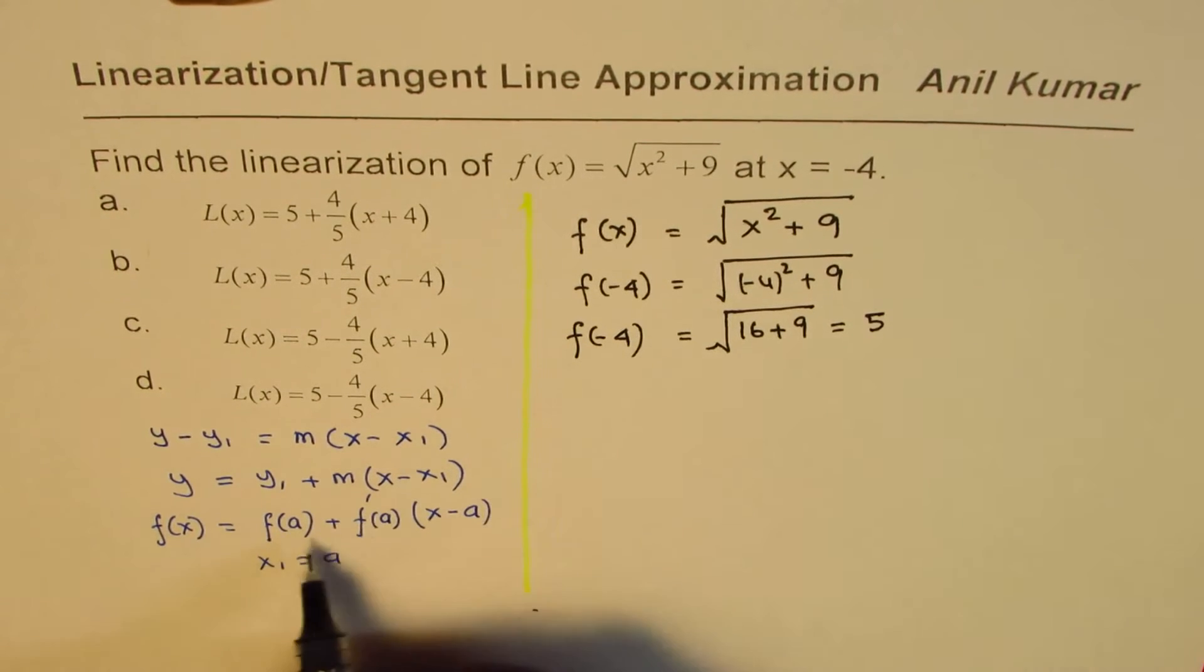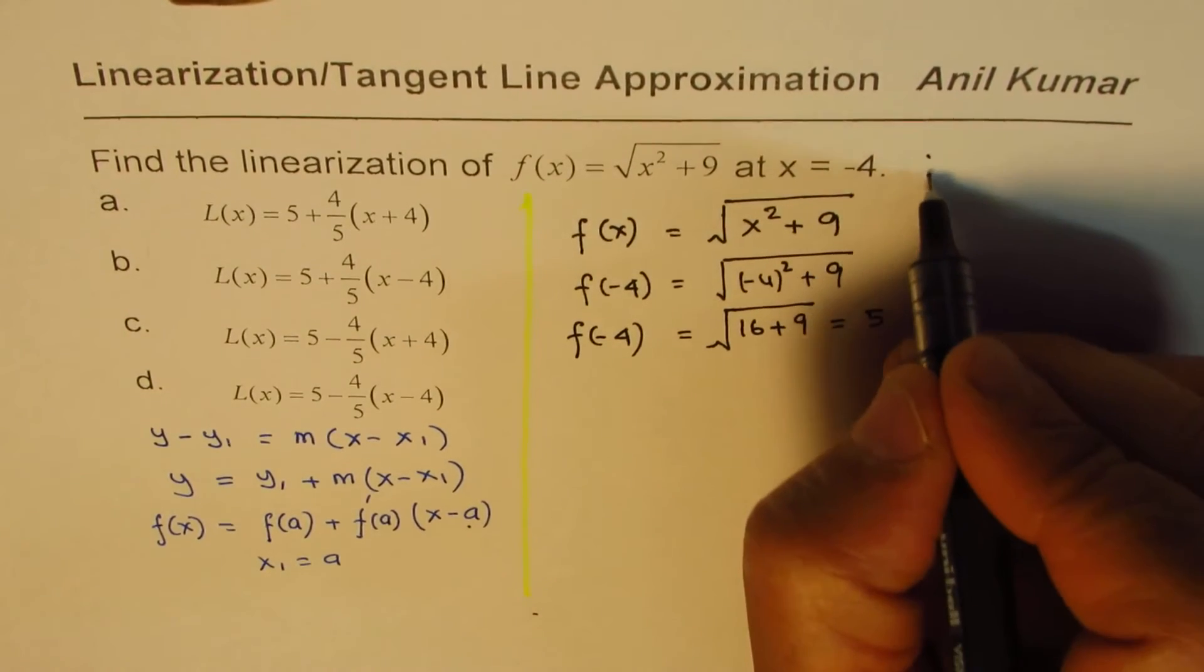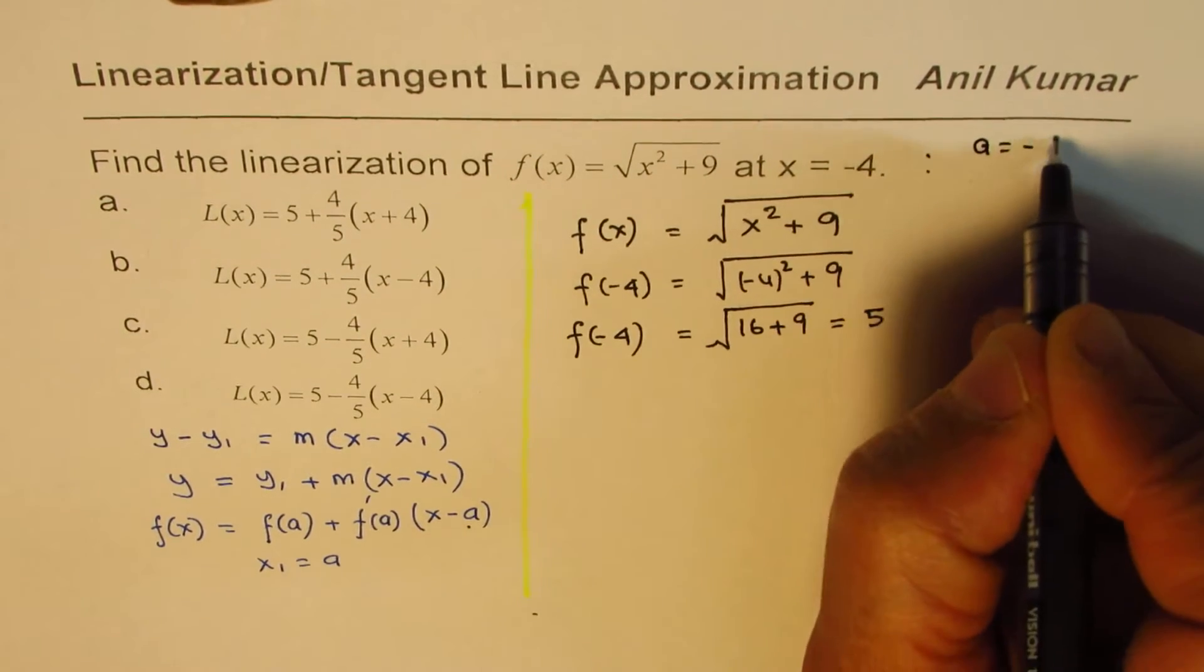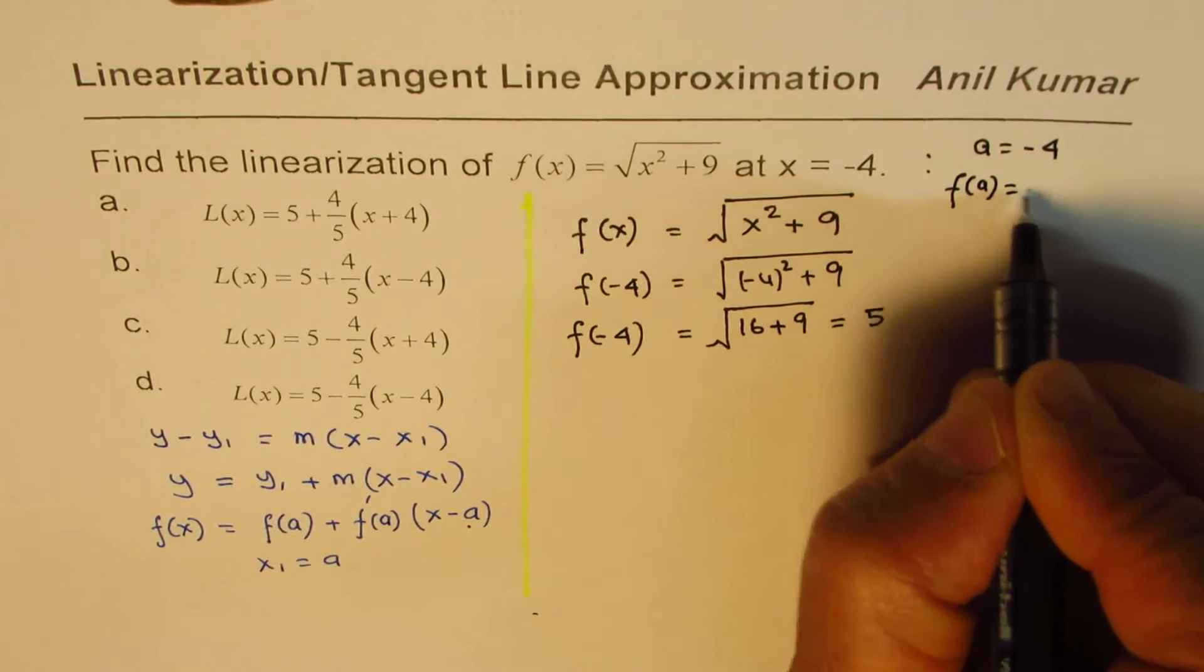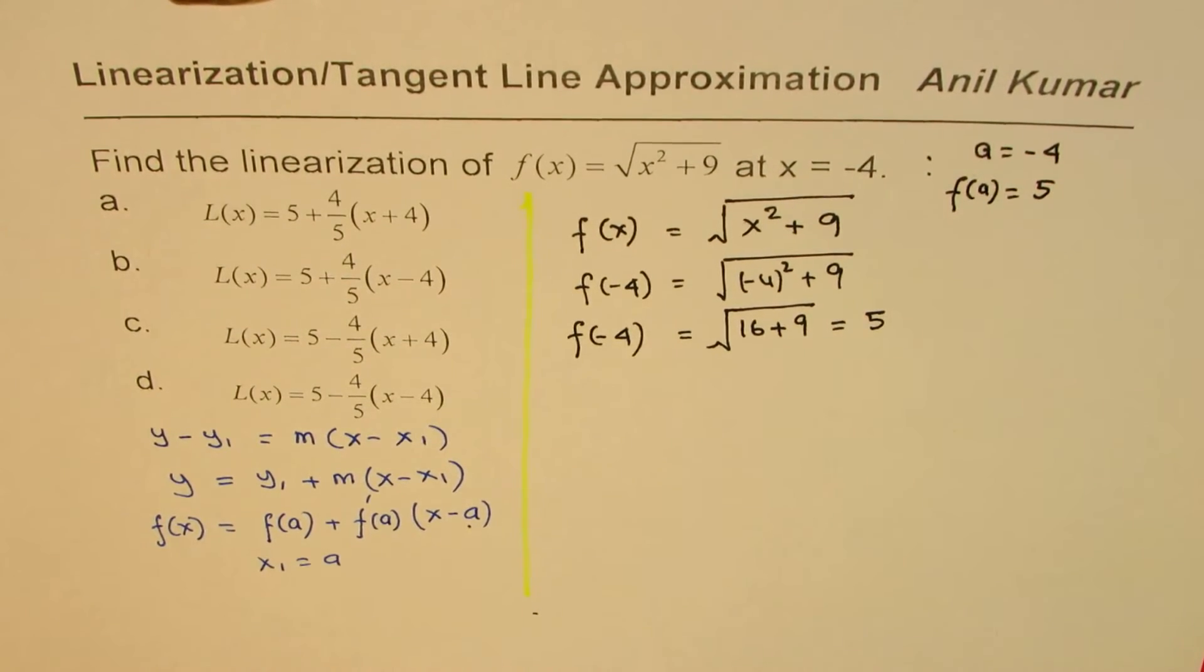So we get the value of the function at 5. So in this formula, we have f(a) and a. These two values are known to us. So we say a equals to minus 4, and the value at a is 5. This is what we just calculated.